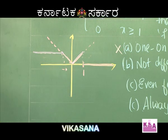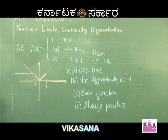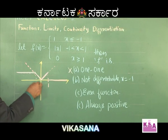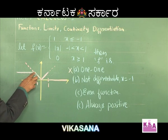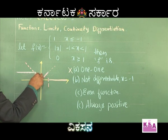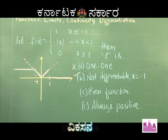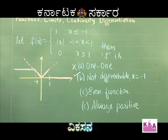Coming to option B: is f not differentiable at x = minus 1? Looking at the graph, it is definitely not differentiable at x = minus 1 — no doubt about it. Also note: the function is discontinuous at x = 1, but it is continuous at x = minus 1. So, function is not differentiable at x = minus 1 is 100% correct.